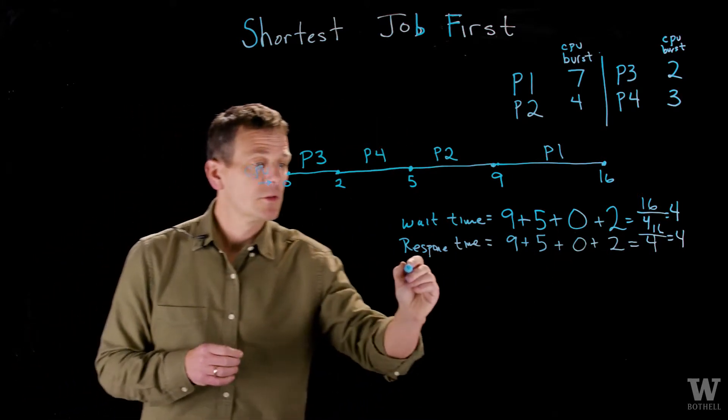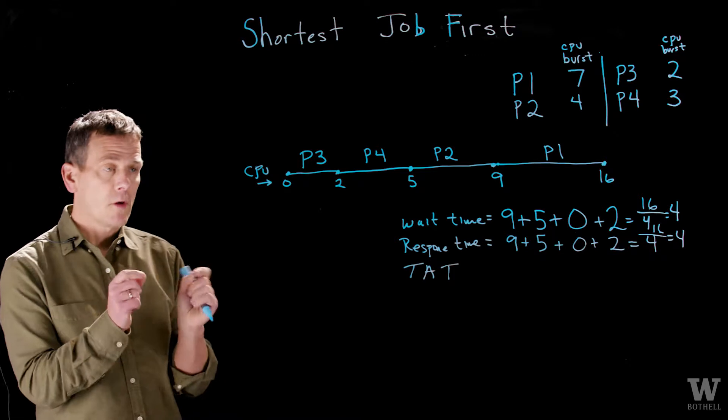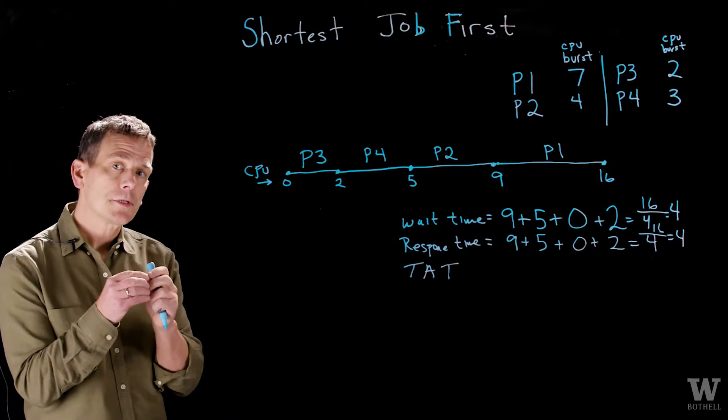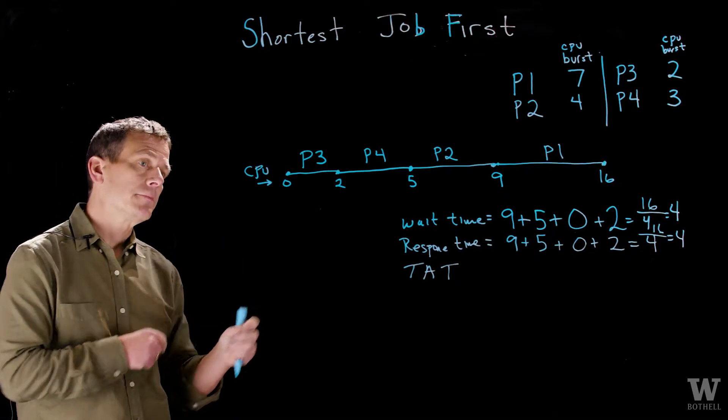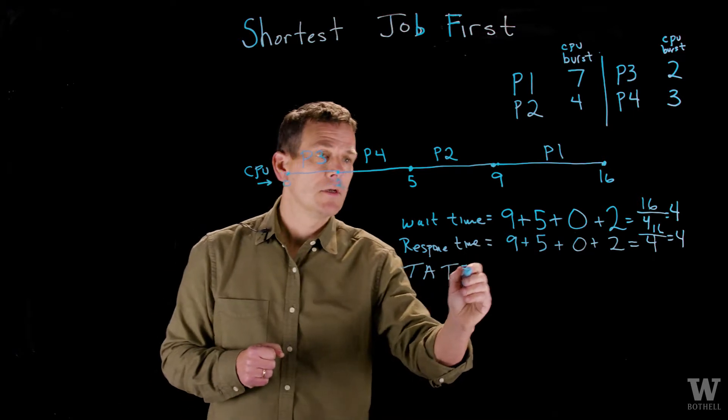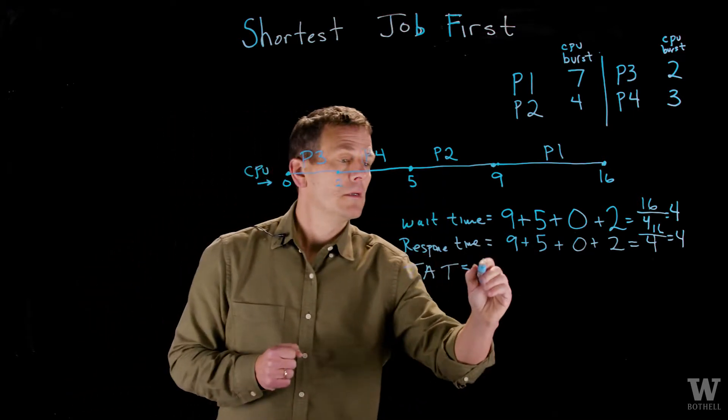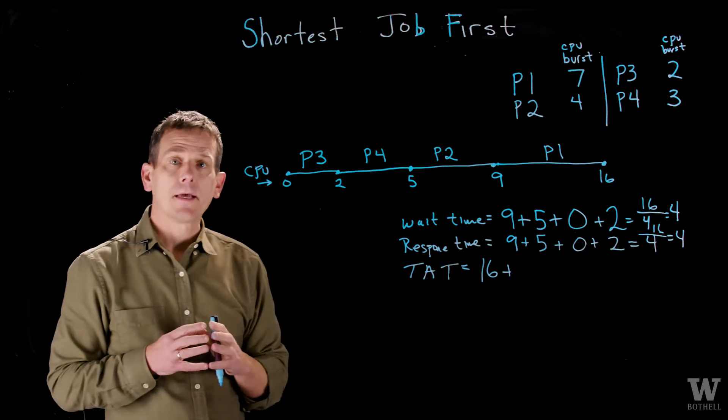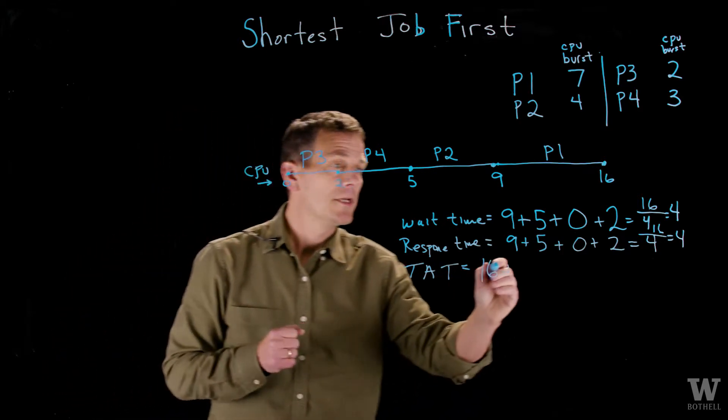Turnaround time. Turnaround time is the average amount of time for all the processes from when the process enters the system to when it exits the system. In this case, for P1, it took us from 0 to 16 to get that out of the system. P2 was done at 9.